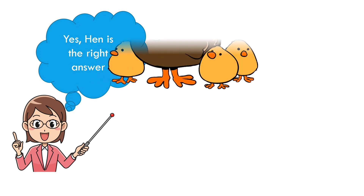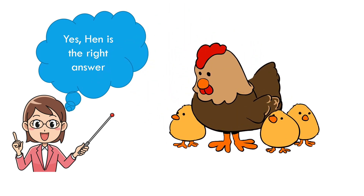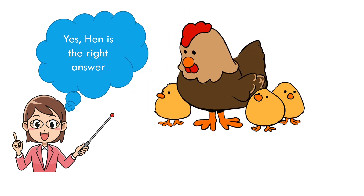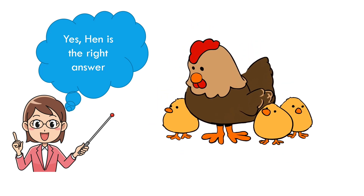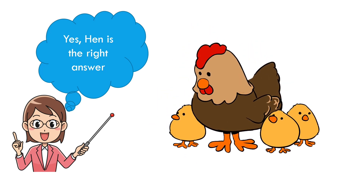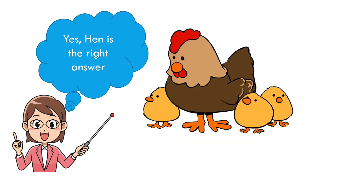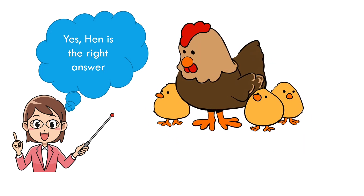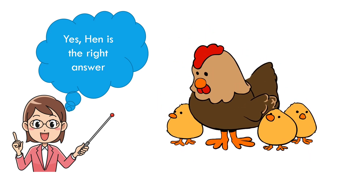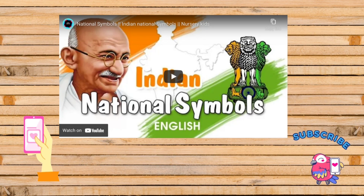Now can you guess which one is a living thing — bike or hen? Yes, hen is the right answer. Hen can breathe, eat, grow, feel, and reproduce, whereas a bike can't. So hen is a living thing and bike is a non-living thing.